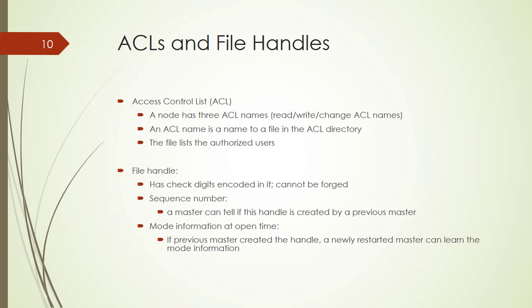The second topic is file handles. A file handle has check digits encoded in it and cannot be forged. A file handle also has a sequence number so the master can tell if this handle was created by a previous master. The third element is mode information at open time — if a previous master created the handle and the master has newly restarted, the master can learn the main information.